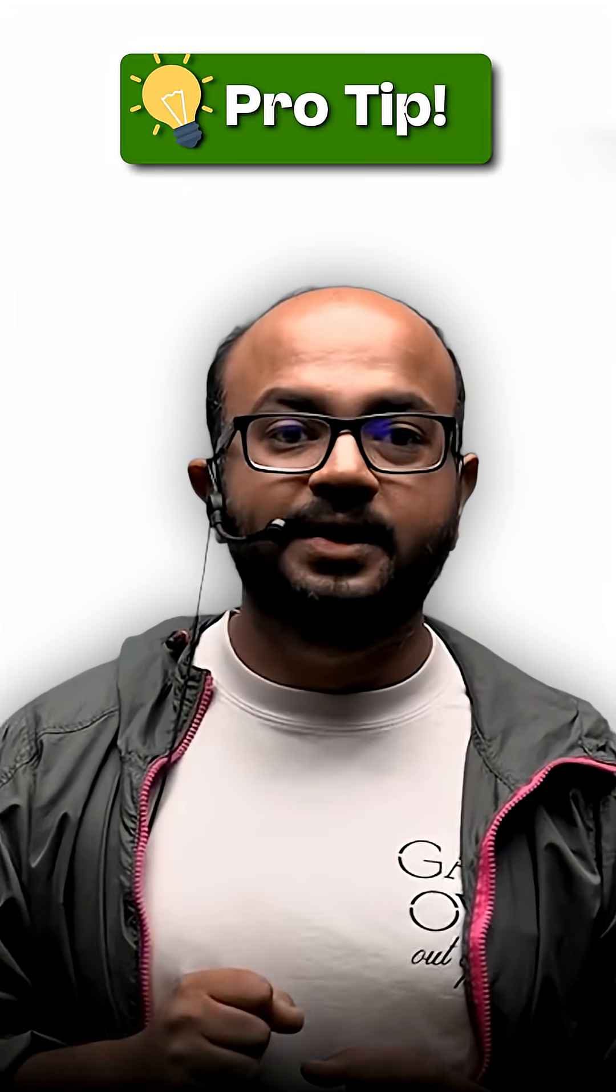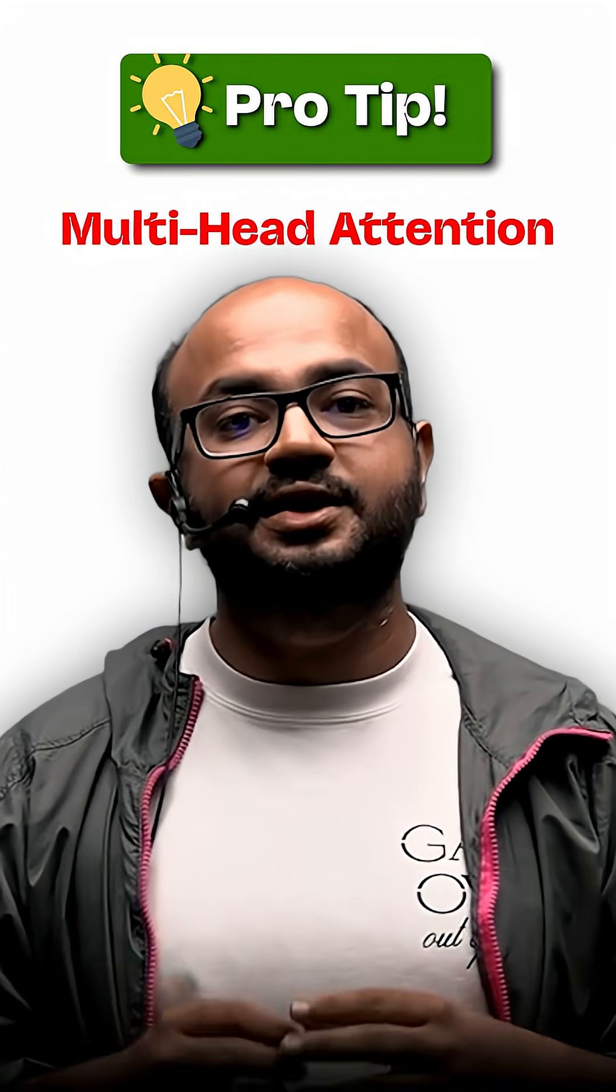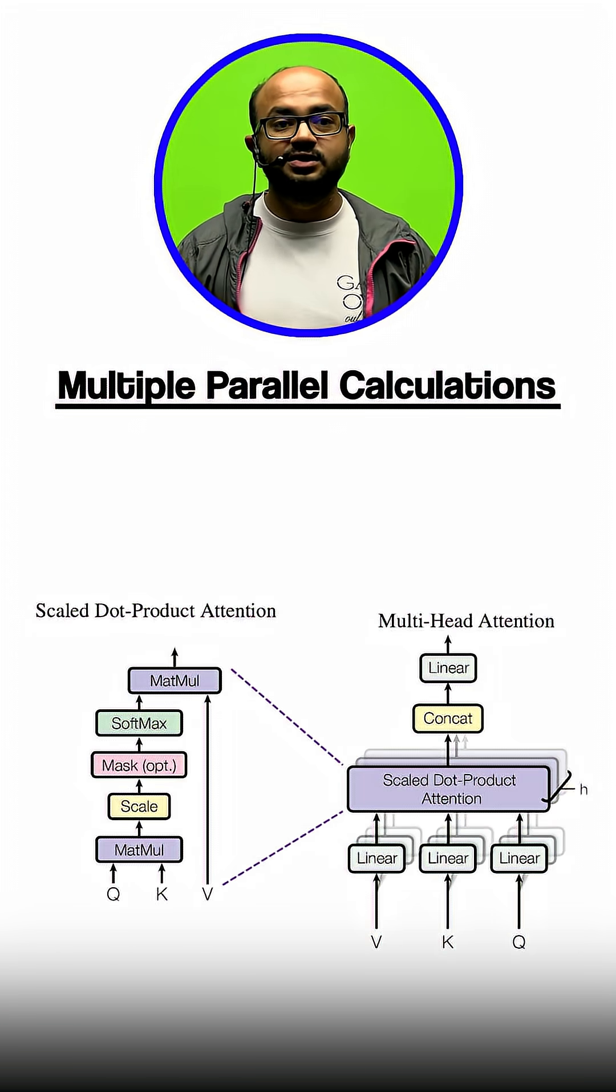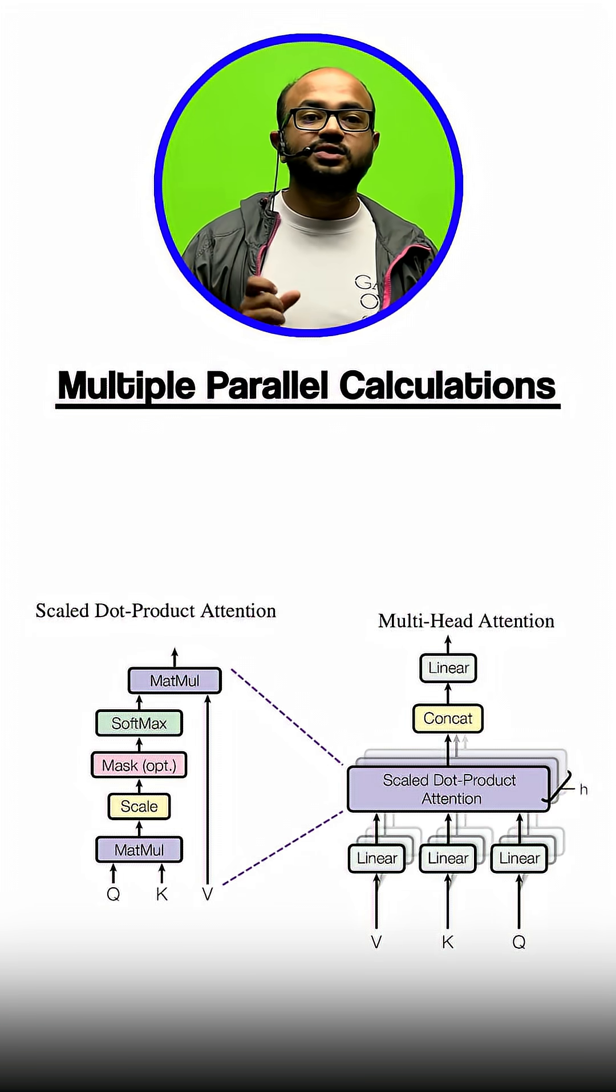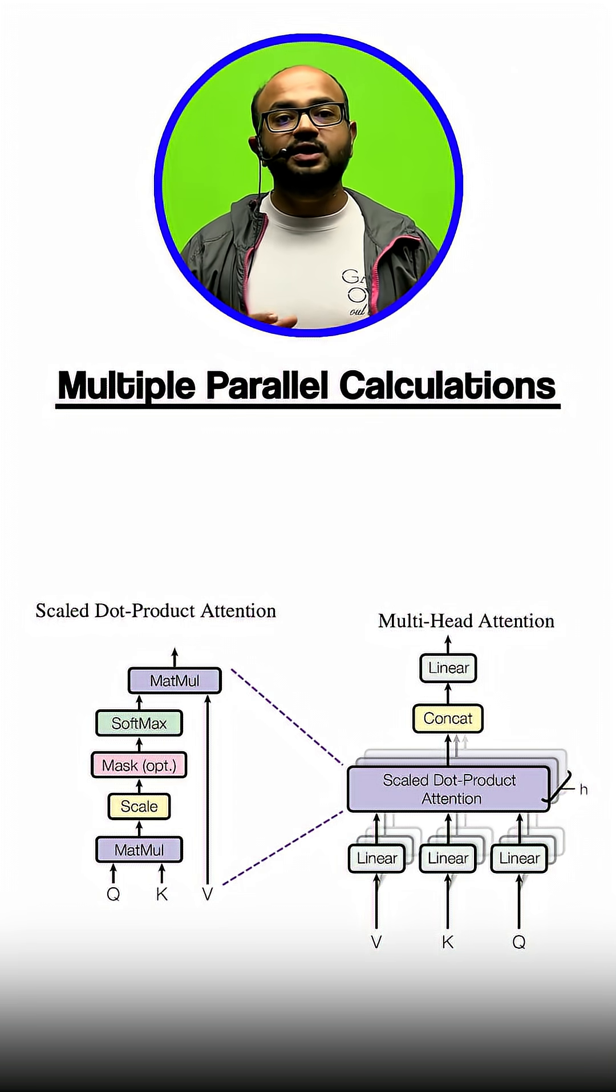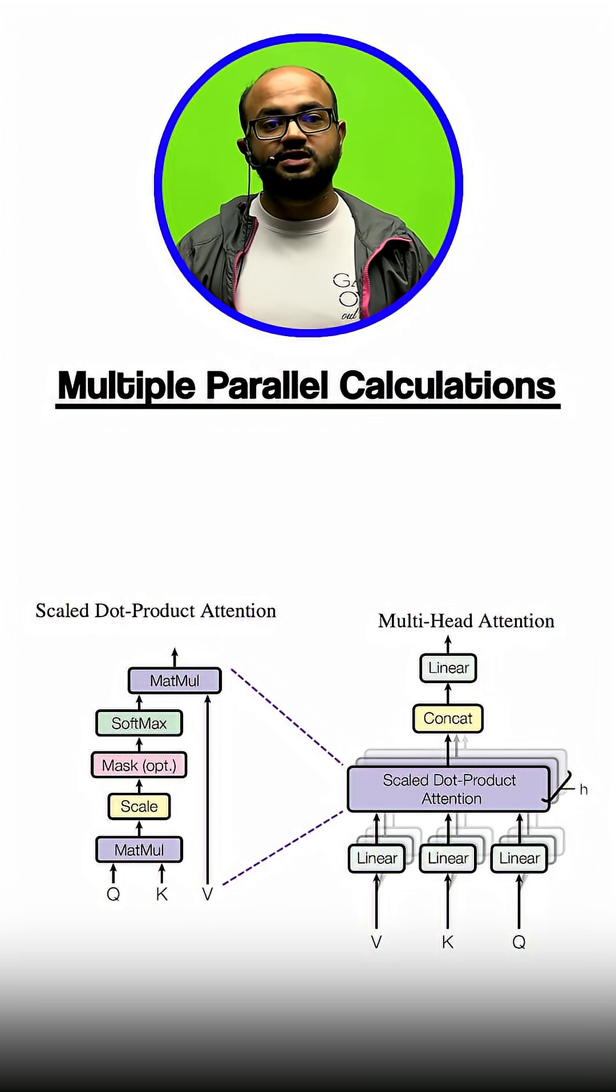Pro Tip: Mention multi-headed attention. Explain it runs multiple self-attention calculations in parallel using different Query, Key, Value splits. This lets the model capture diverse relationships simultaneously.